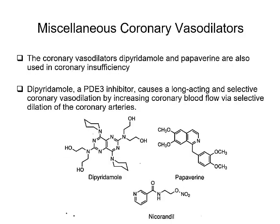There are miscellaneous agents that can work as coronary vasodilators, like dipyridamole, which is a PDE-3 inhibitor. We also have papaverine, which we saw with the opioids, and nicorandil, which has an organic nitrate component and acts as a vasodilator as well.